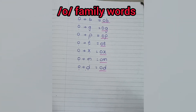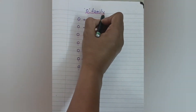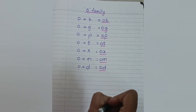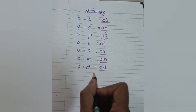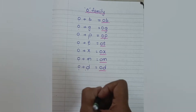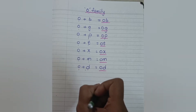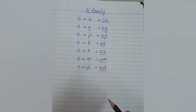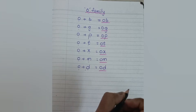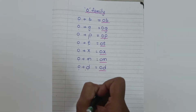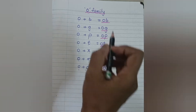Hello everyone, welcome to my channel Level Up Phonics. Hope all are doing great. Today I am sharing O family words. This is the fourth video in this series. Before this, I have shared the words of A, E, I — the sounds of these particular letters, blending of two-letter words and three-letter words, that is CVC words. I have created a playlist of this and will provide the link in the description box.